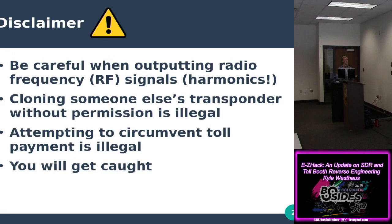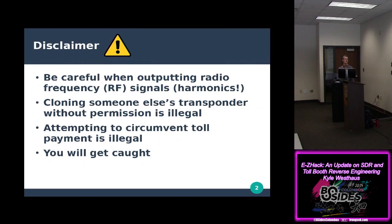Before I begin, when working with radio frequency signals, especially the device I'll be using to output with harmonics, make sure you don't output on a spectrum that's illegal, or you will get in trouble with the FCC. Cloning other people's transponders is illegal, and circumventing toll payment is also illegal. If you're going to output with devices and aren't sure what they'll do, you can use a Faraday cage — basically an insulated box wrapped in metal — to avoid breaking devices around you.